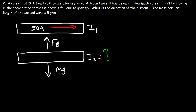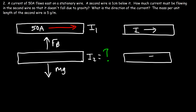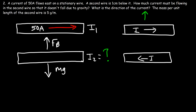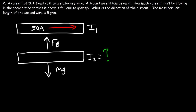What direction must the current be going? If the currents flow in opposite directions the wires repel — that would push the lower wire further down, which we don't want. So the currents must be parallel to each other so the two wires attract. Therefore I2 is also flowing east. Now we need to calculate the value of I2.